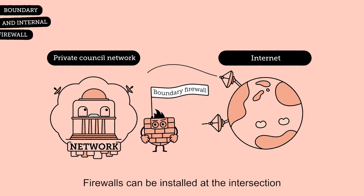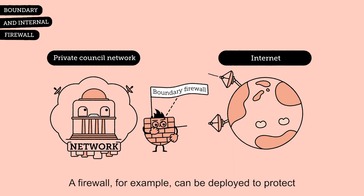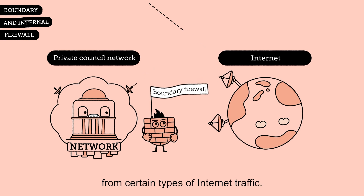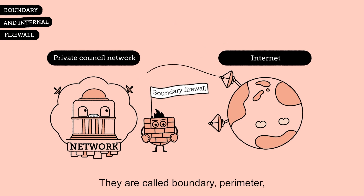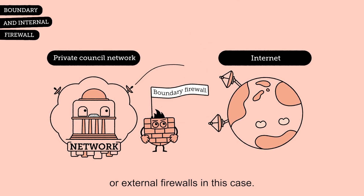Firewalls can be installed at the intersection of two networks. A firewall, for example, can be deployed to protect a private council network from certain types of internet traffic. They are called boundary, perimeter, or external firewalls in this case.